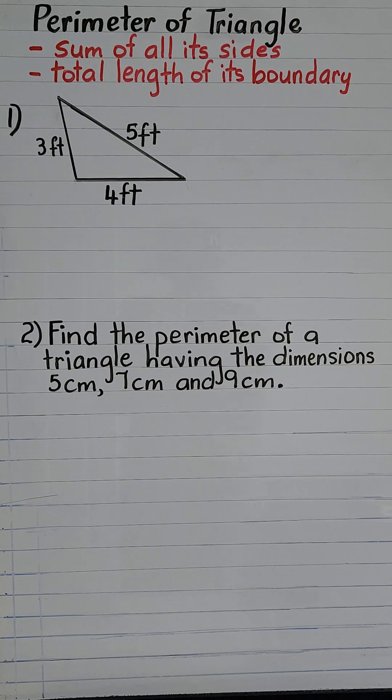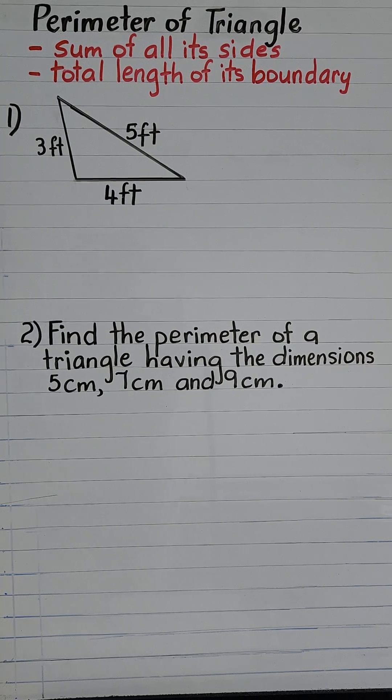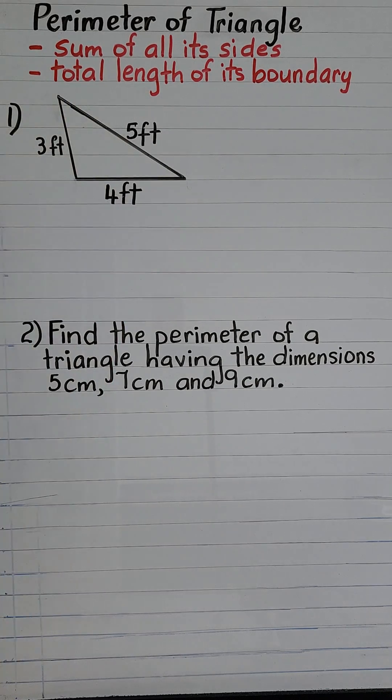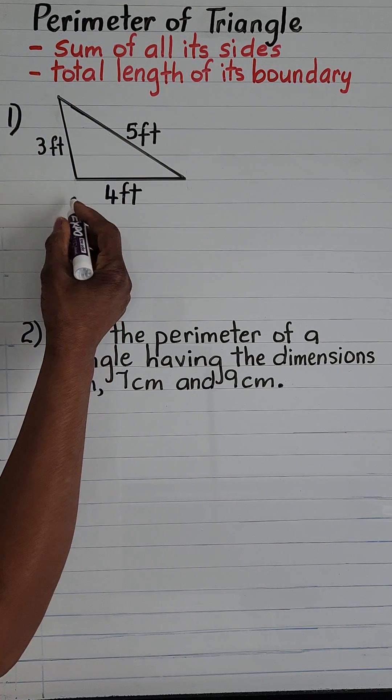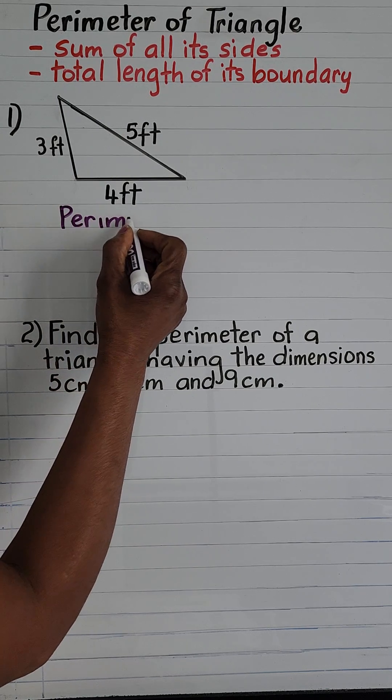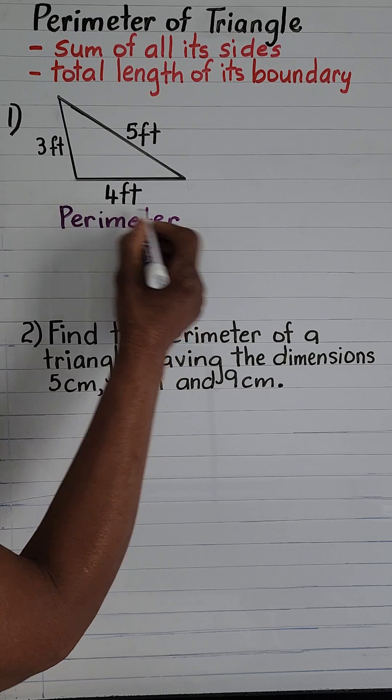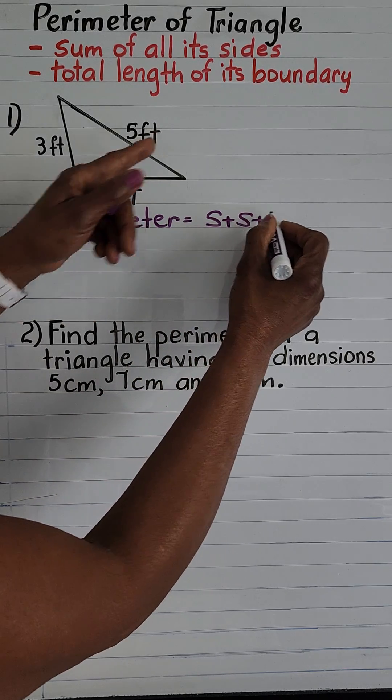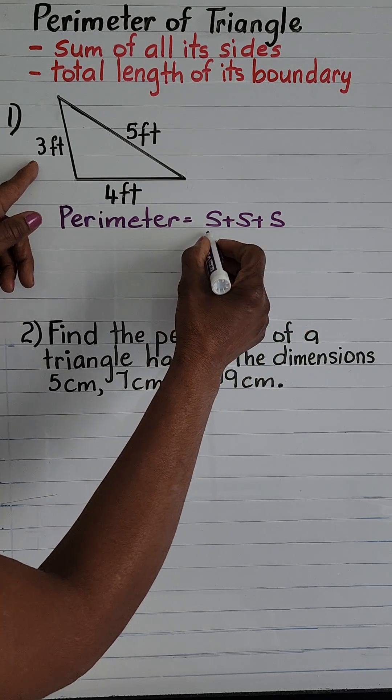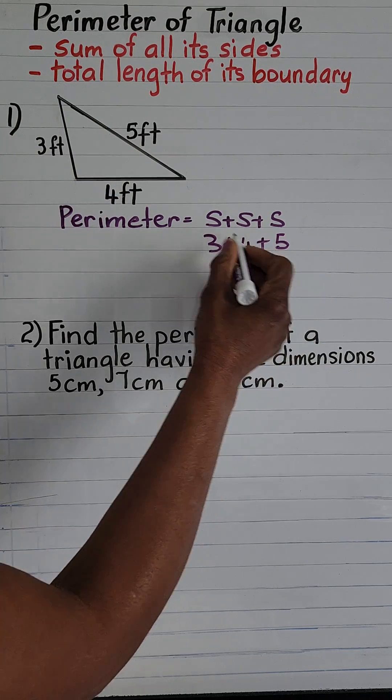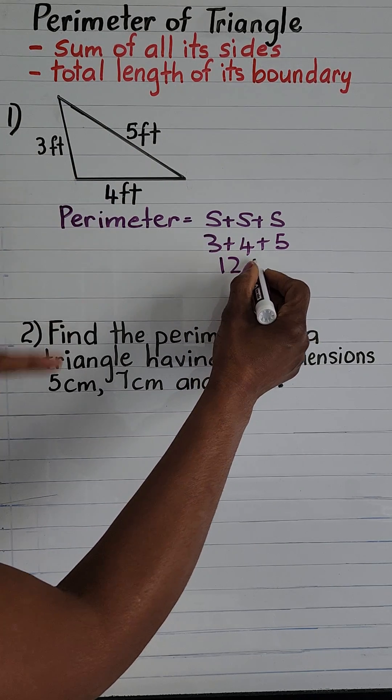For example, in the triangle we have sides three feet, four feet, and five feet. To find the perimeter of this triangle we are going to add the three sides. That is perimeter equals side plus side plus side and that is equal to three plus four plus five and that is equal to twelve feet.